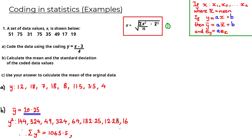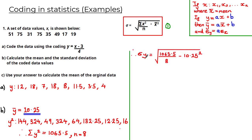The sum of the y² terms is equal to 1065.5. Counting the data points, we have n = 8. Using these values in the formula, σy = √(1065.5 / 8 − 10.25²), which gives us a standard deviation of y equal to 5.30 rounded to three significant figures.